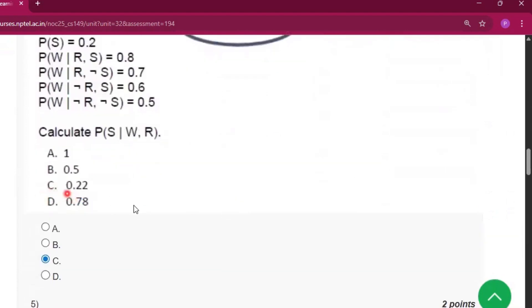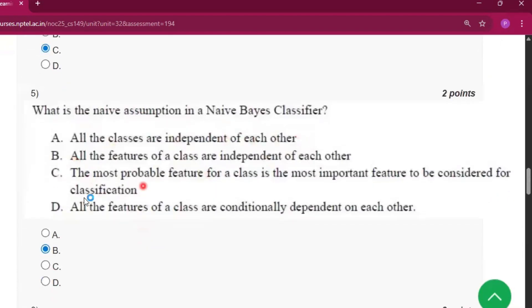Now question number 4, the answer will be 0.22, that is option C. Now question number 5, the answer will be option B: all the features of a class are independent of each other.